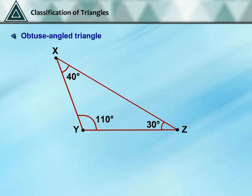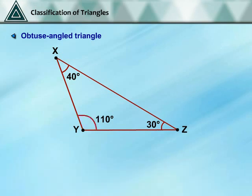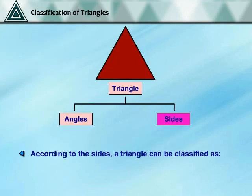Obtuse Angle Triangle: if a triangle has an obtuse angle, it is called an Obtuse Angle Triangle. In the given figure, triangle XYZ is an Obtuse Angle Triangle as Angle XYZ is equal to 110 degrees. According to the sides, a triangle can be classified as an Isosceles Triangle, an Equilateral Triangle, or a Scalene Triangle.